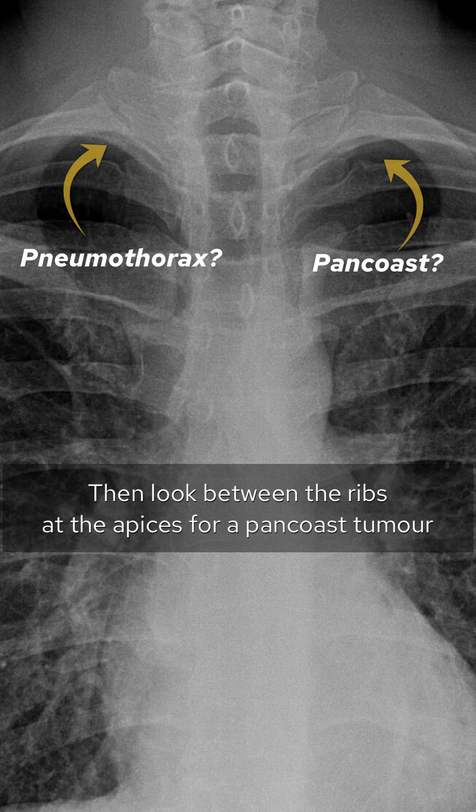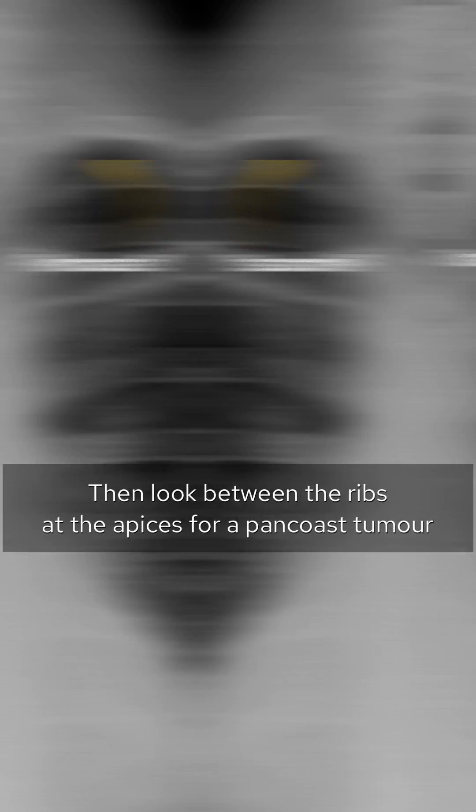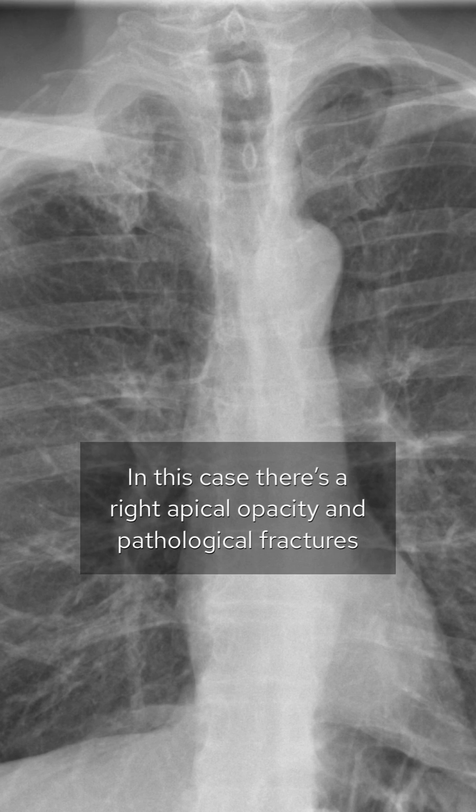Then look between the ribs at the apices for a Pancoast tumour. In this case there's a right apical opacity and pathological fractures.